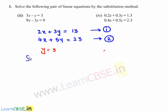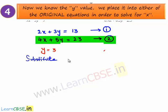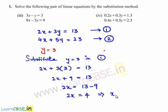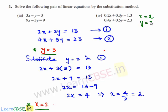Now let us substitute y is equal to 3 in equation number 1. We get 2x plus 3 times 3 is equal to 13. That is 2x plus 9 is equal to 13, so 2x is equal to 13 minus 9, which is 4. That implies x is equal to 4 divided by 2, which is 2. Therefore, x is equal to 2 and y is equal to 3 is the solution for the given pair of linear equations.